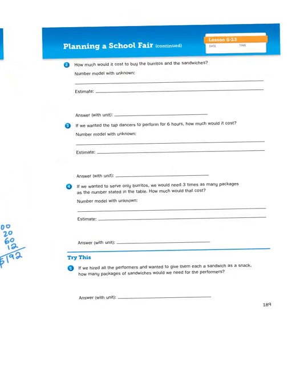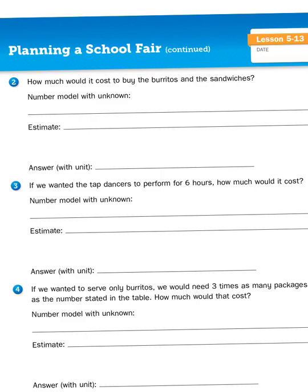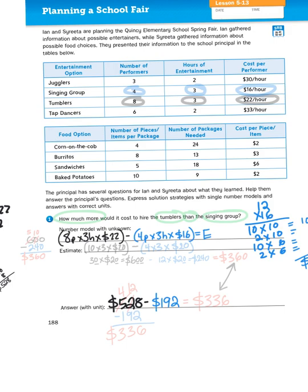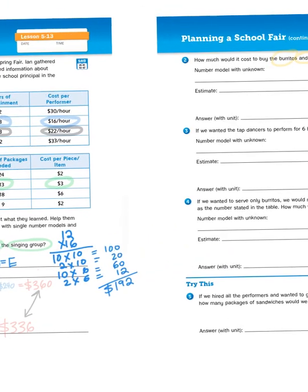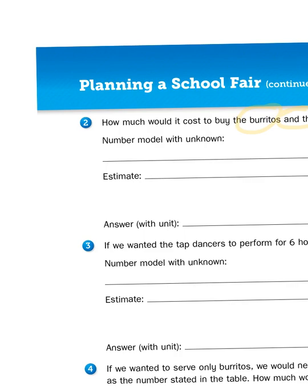I'm going to set us up for one more problem because we were looking at entertainers. Now let's look at the food table of possible costs. Number two says, how much would it cost to buy the burritos and the sandwiches? And, see, when I see the word and, that tells me I'm going to be adding. What am I adding? Cost of burritos and the cost of sandwiches. So how much are burritos? Well, it looks like burritos come eight in a package. You would need at least 13 packages, and they cost $3 per piece. So 3 times 13 times 8. So let's set that up. So burritos would cost 8 times 13 times $3.